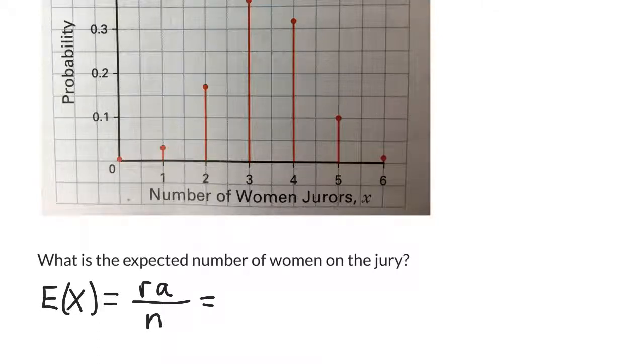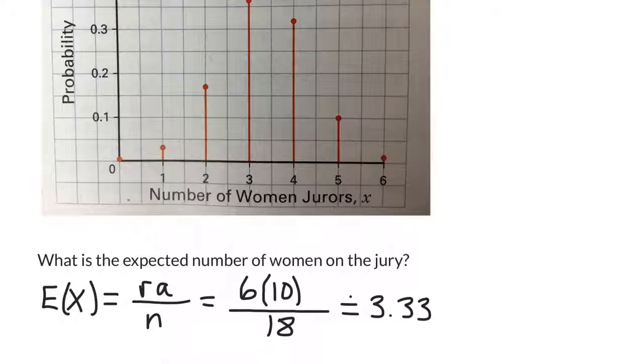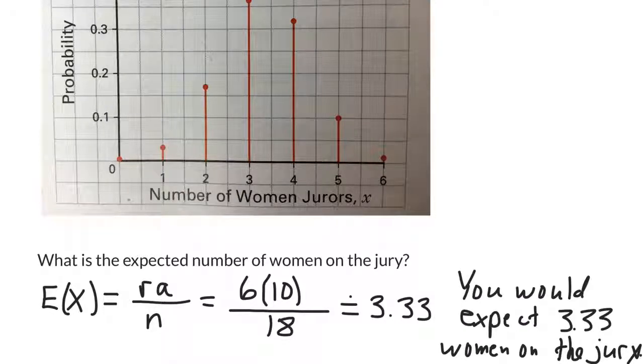So I already went through this above, but R was 6, A was 10, and N was 18. So if you do the math, you get a value of 3 and a third. So you would expect about 3.33 women on the jury.